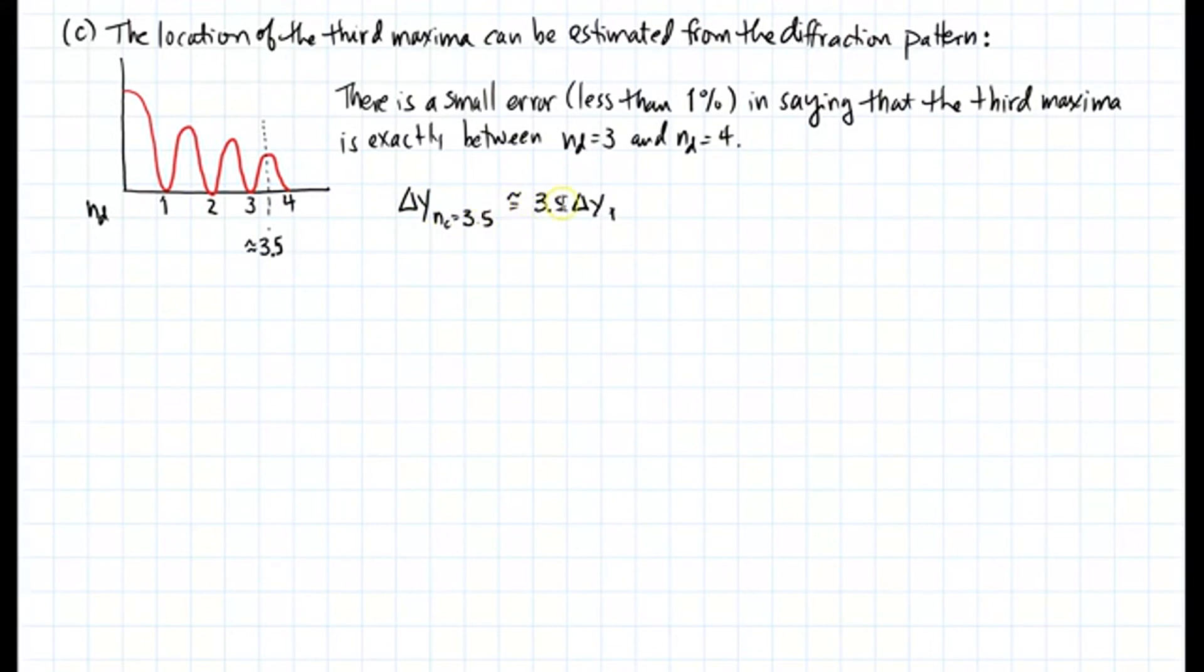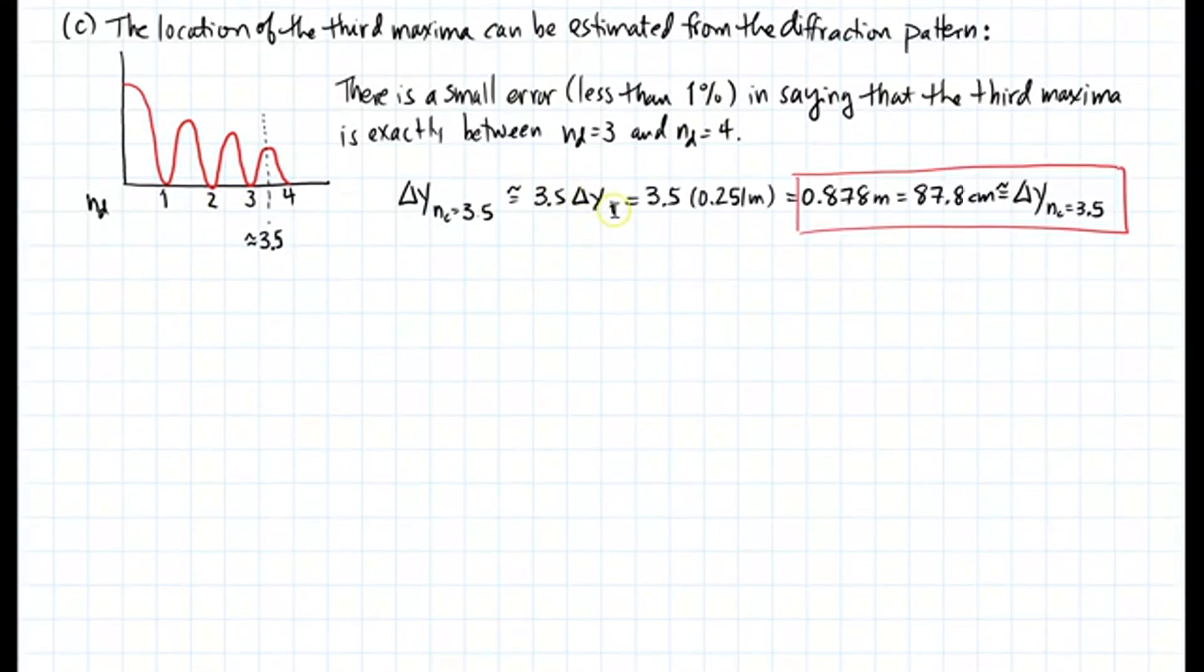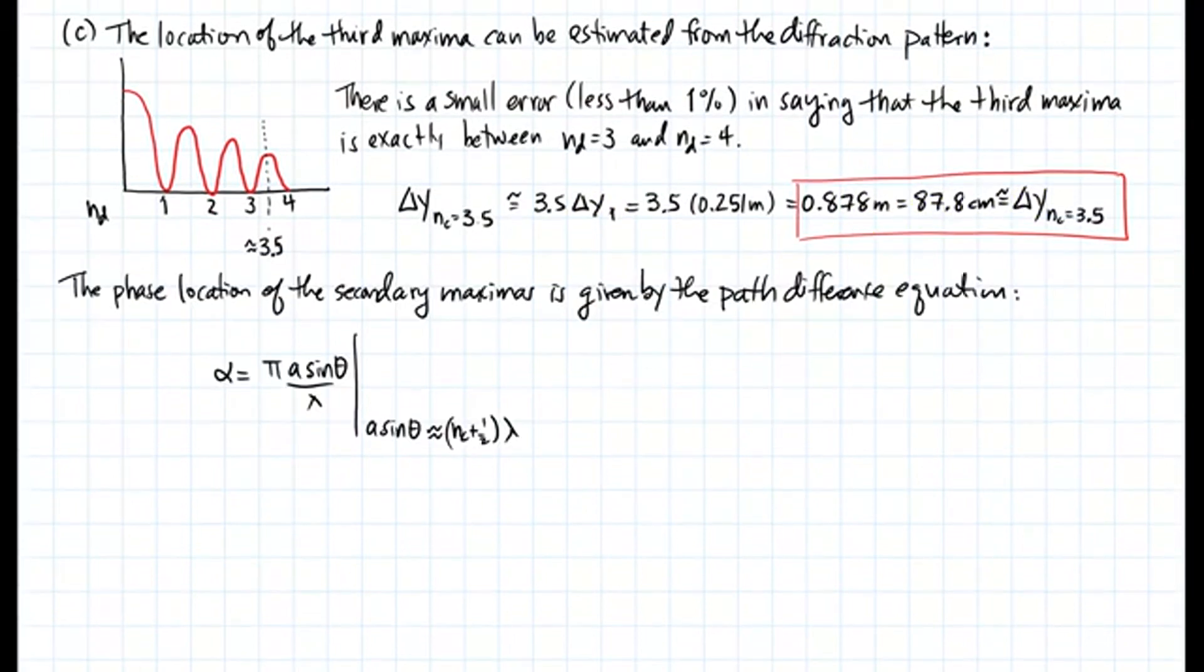Plugging in delta Y1, I get that this location is 87.8 centimeters. The phase location alpha of the secondary maxima is given by the path difference equation. If I have alpha, it's pi A sine theta divided by lambda, but for maximas, it's approximately equal to NC plus 1.5 times lambda. Substituting that in, alpha is approximately NC plus 1.5 times pi.